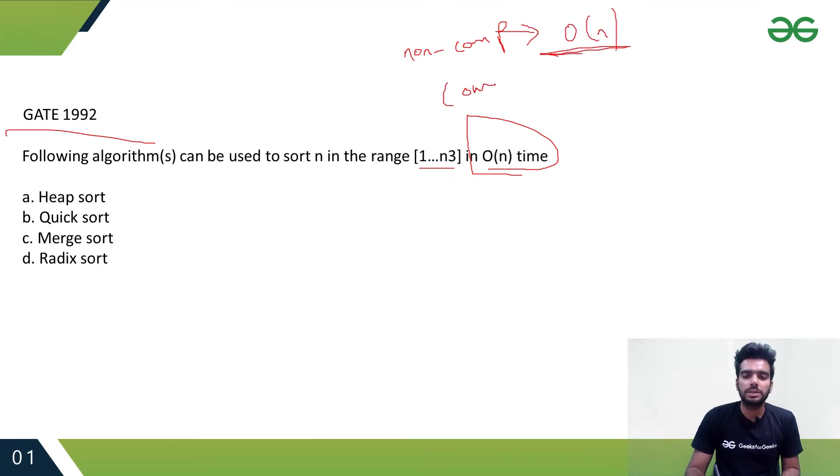Because all comparison-based sorting algorithms take O(n log n) time at best - this is the minimum time they will take. Since we're also given the range, we can use non-comparison based sorting algorithms which will take O(n) time.